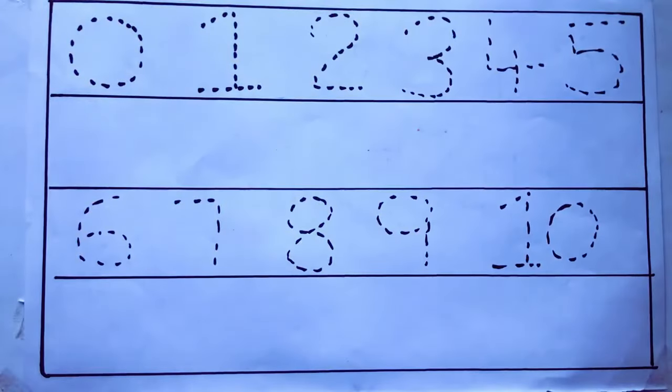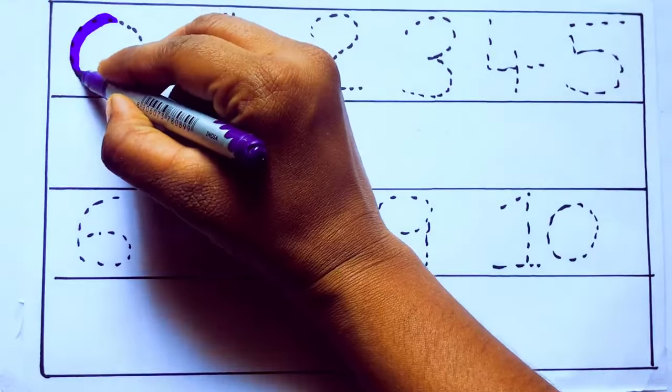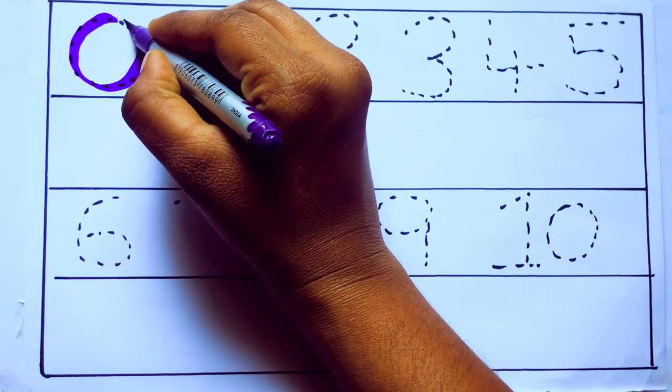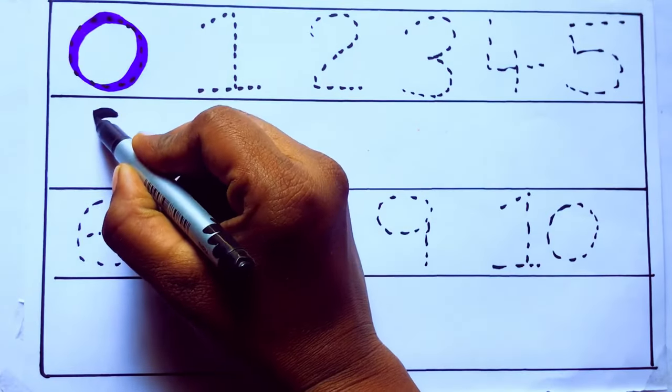Let's draw numbers. Violet color, 0, Z-E-R-O. Zero.